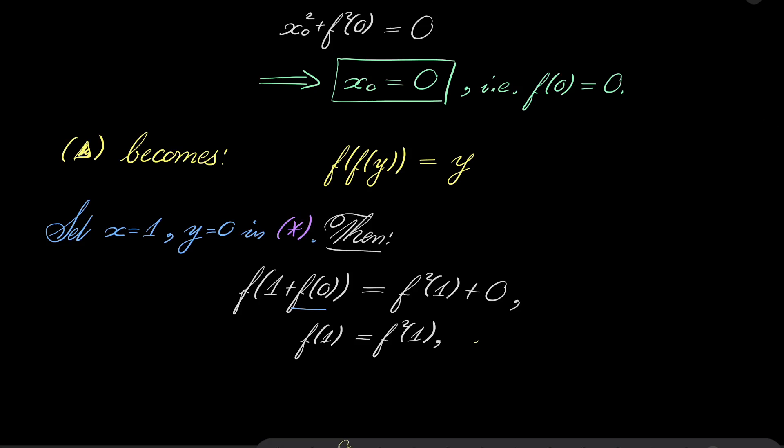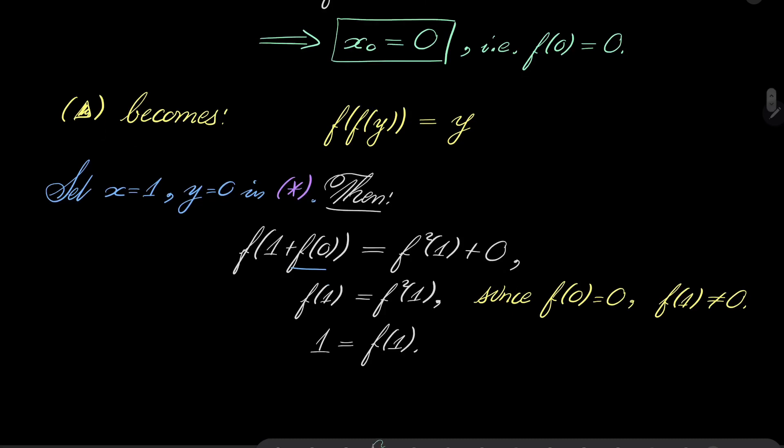We know that f of 1 is not 0 because our function is bijective and it's 0 for other argument. So, since f of 0 is 0, f of 1 is not 0 by injectivity. So, we can divide by f of 1 and we get 1 equals f of 1.